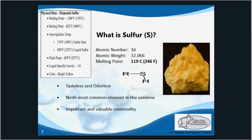Sulfur is present in natural gas primarily as H2S, but there are also many other sulfur compounds that may be present, like mercaptans, sulfides, and disulfides.